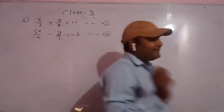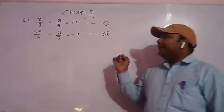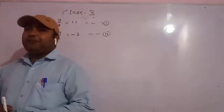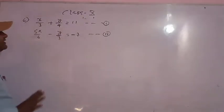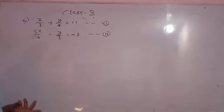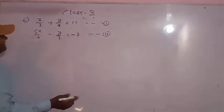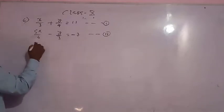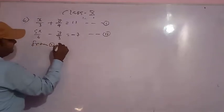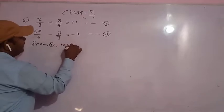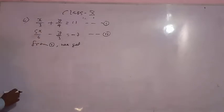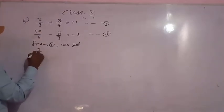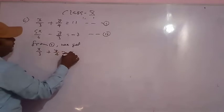Now see the next question, question number 6. In this question you can easily see it is in the form of fractions. Despite this, we will not use elimination mode because we can easily use the substitution method. The first equation is x by 3 plus y by 4 is equal to 11.